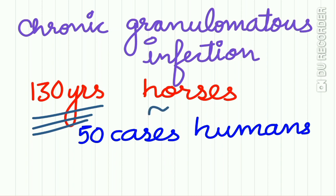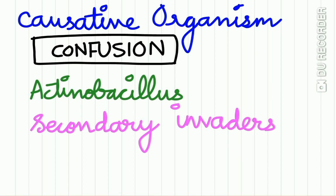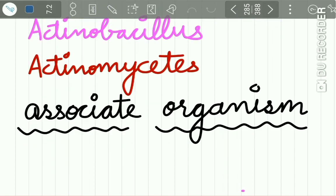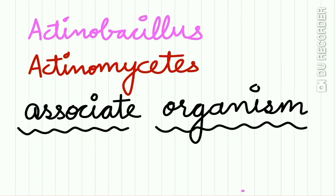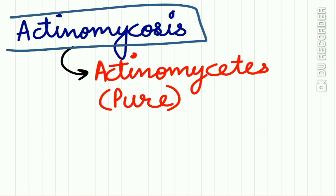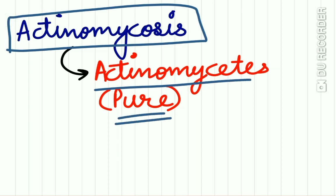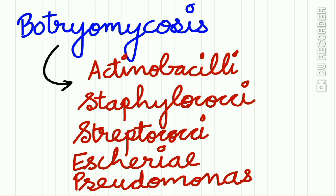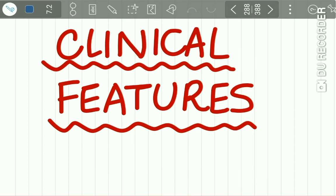Very few cases — only up to 50 — are reported in humans. The causative organism for botryomycosis is confusing. Actinobacillus is thought to be the associated organism, but there are many secondary invaders also present in the botryomycosis lesion, including actinomycetes. In actinomycosis, it is caused by actinomycetes pure strain, but in botryomycosis numerous organisms — actinobacillus, staphylococci, streptococci, Pseudomonas — are all present, so the exact causative organism is obscure.